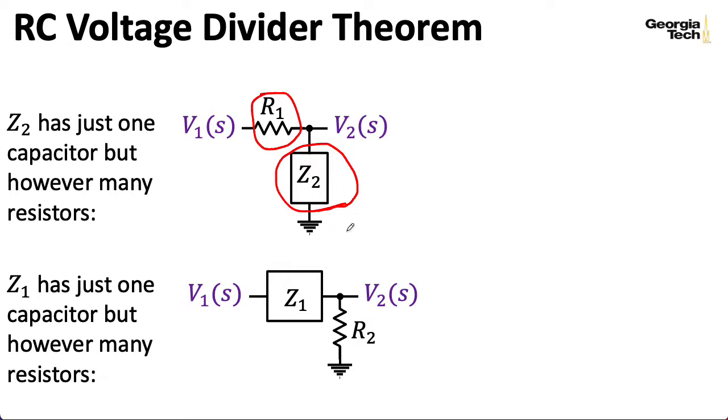And you could have this flipped around, so you could have the network containing the capacitor up here and just a single resistor down here. It doesn't really matter.